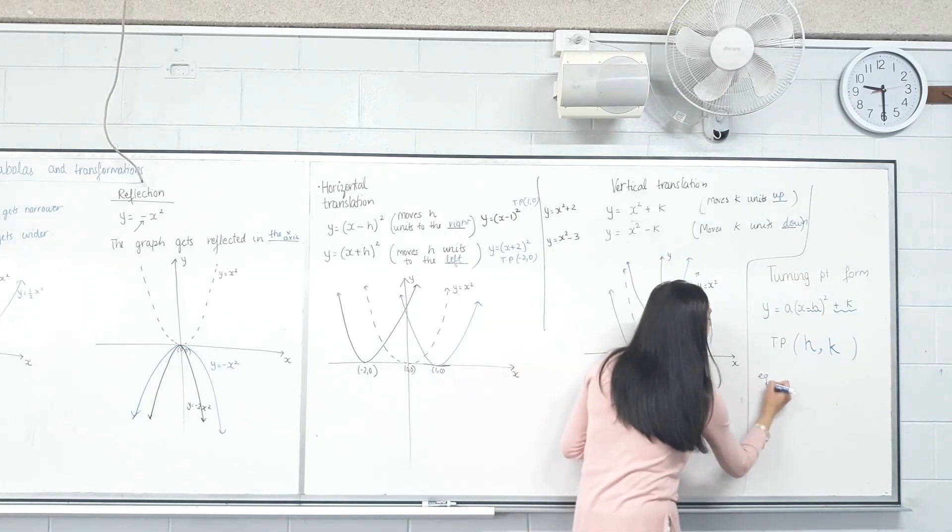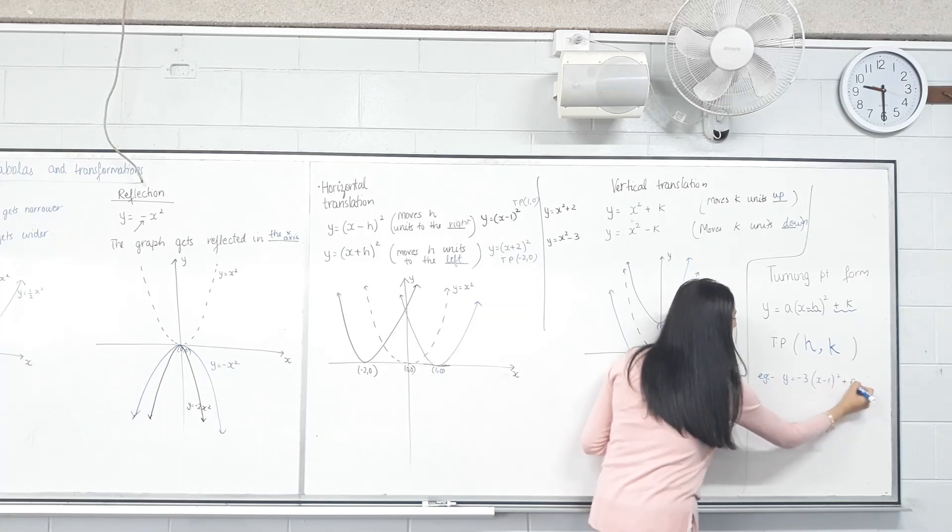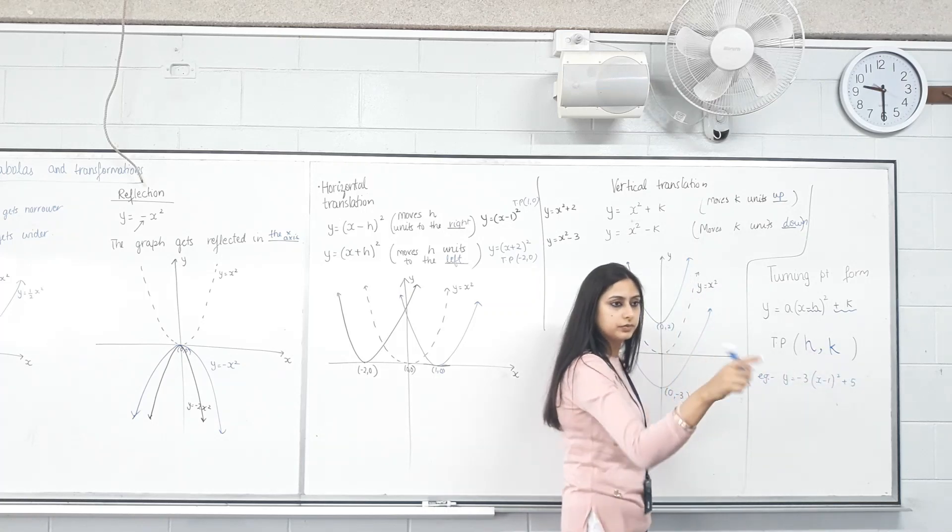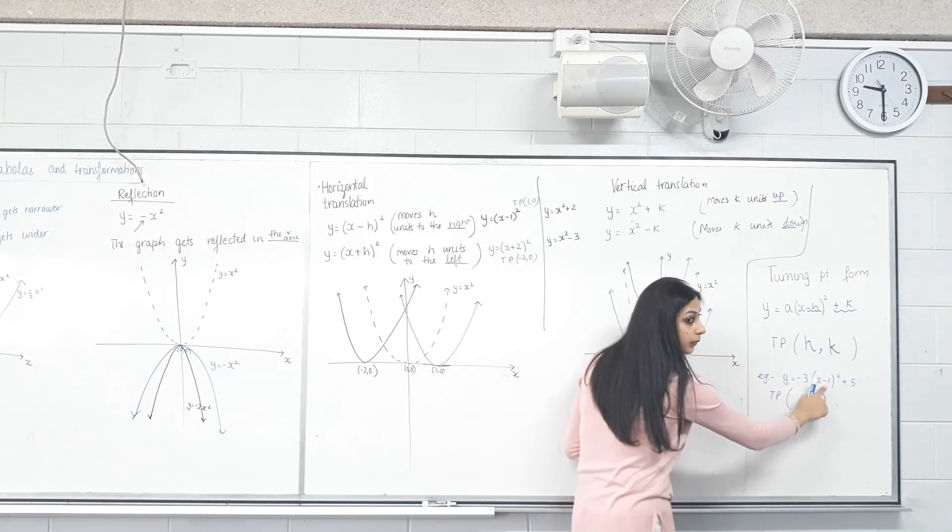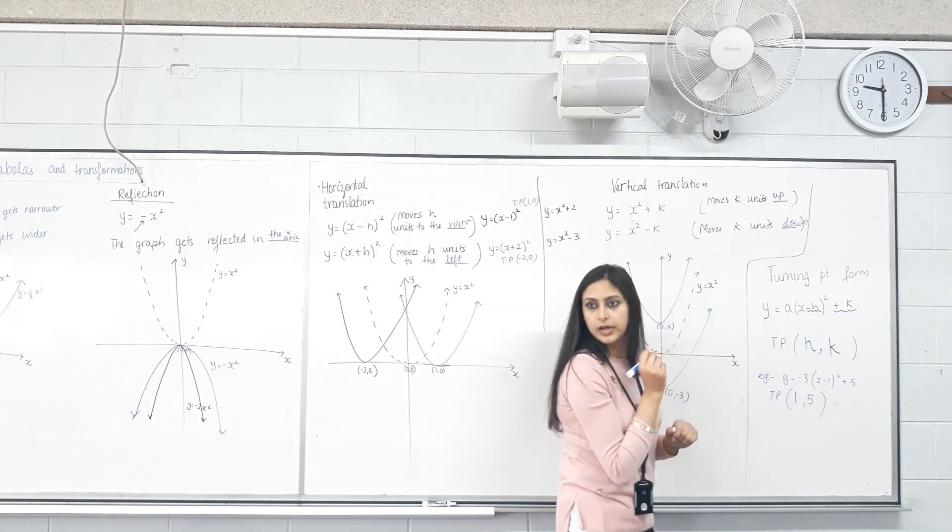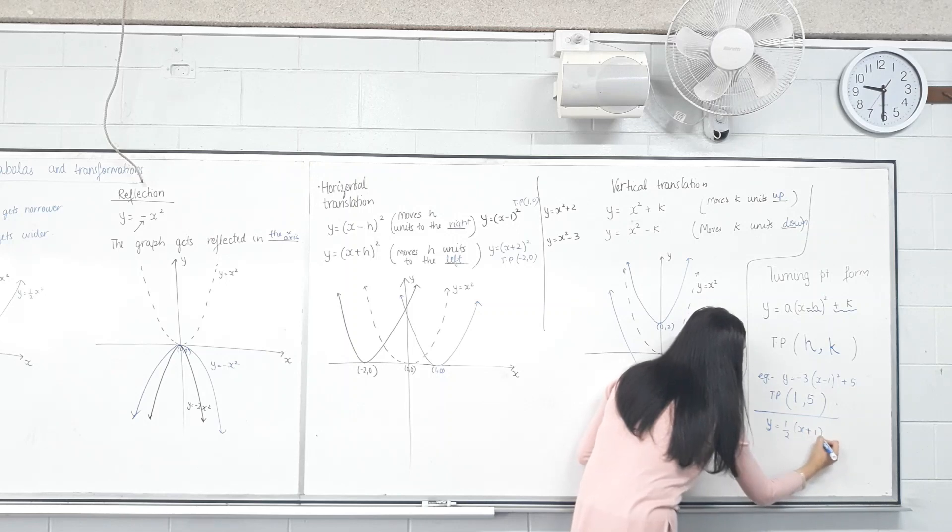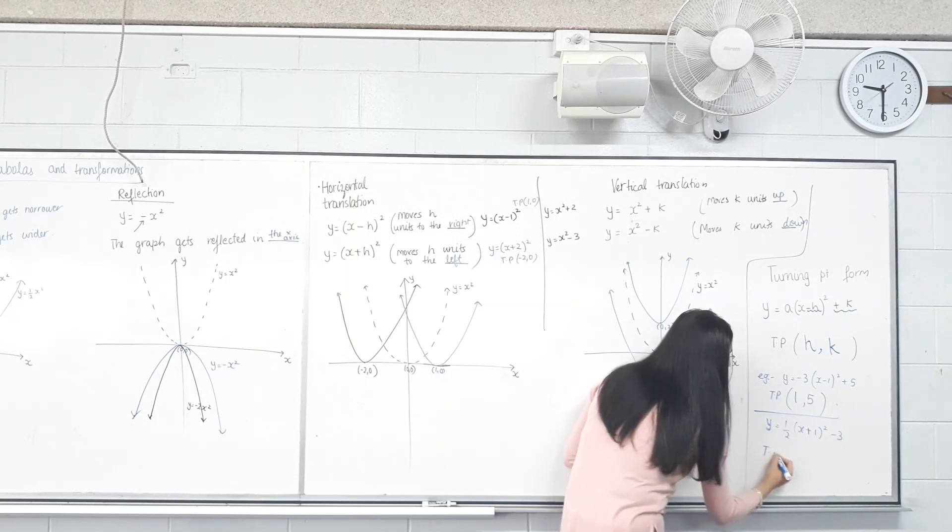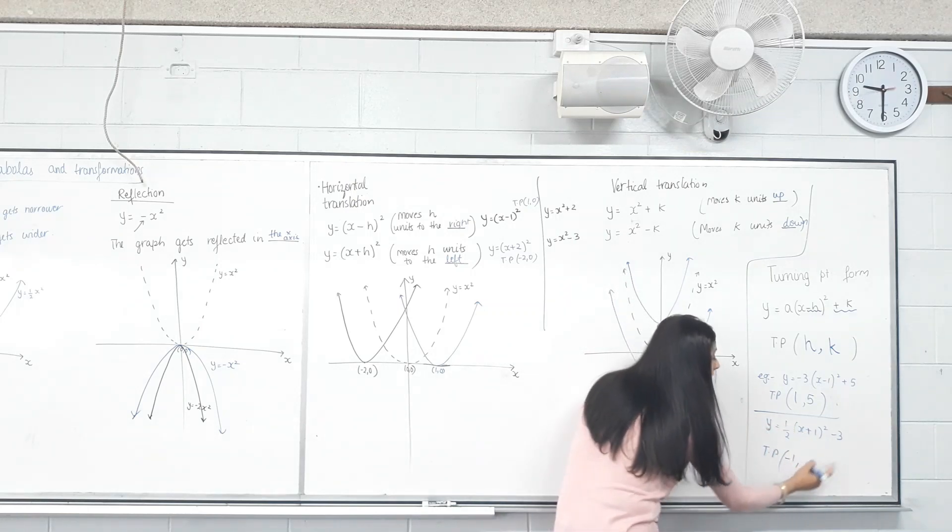So if I give you an example, what would be the turning point? Opposite of negative 1 is positive 1, and the same as plus 5 is 5. Happy with that? Let's do another one. What is the turning point? Opposite of plus 1 is negative 1, and the same as negative 3 is negative 3. That's it.